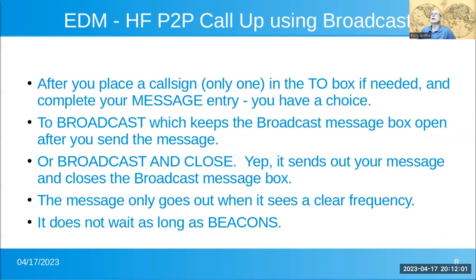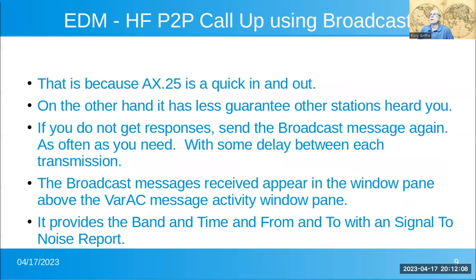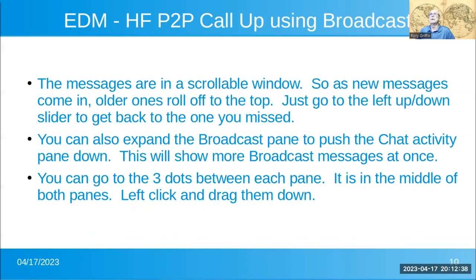The message only goes out when it sees a clear frequency, but it doesn't wait as long as beacons. That is because AX.25 is a quick in and out. On the other hand, it has less guarantee that other stations hear you. If you do not get responses, send the broadcast message again as often as you need, with some delay in between transmissions, especially if that particular frequency is a little busy. The broadcast messages received appear in the window pane above the Barrick message activity window pane. It provides the band, time, and from and to signal noise report as well — a new feature. The messages are in a scrollable window, so as new messages come in, the old ones roll off the top.